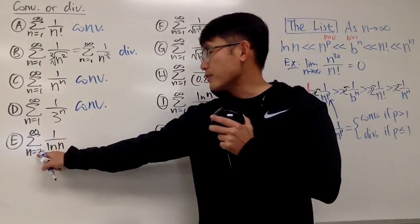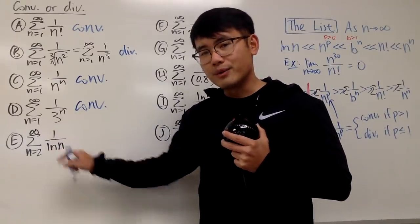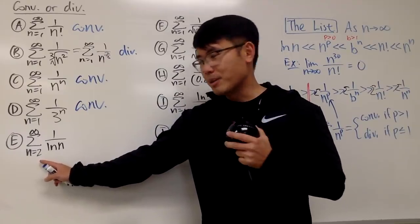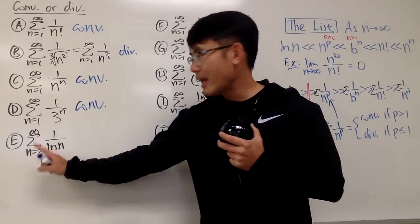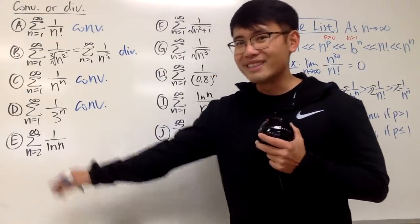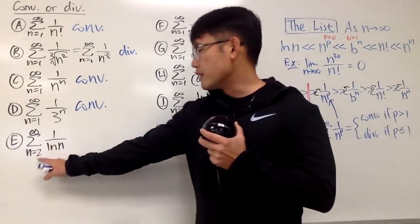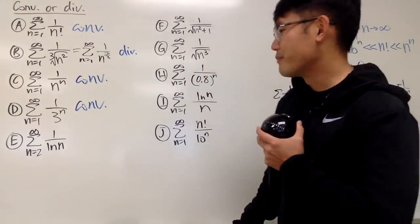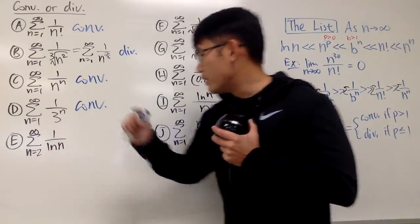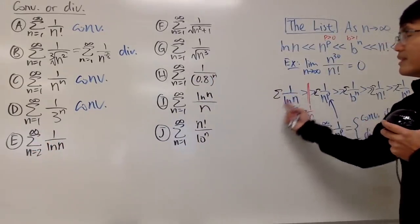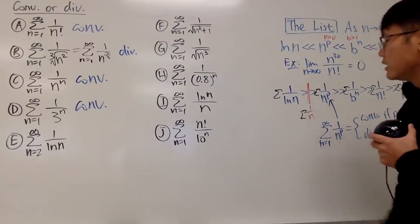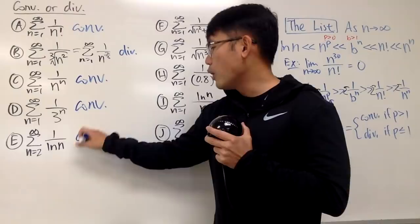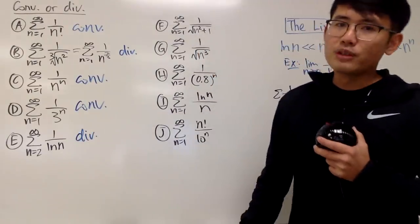The series from n=2 to infinity of 1 over ln(n) — notice we start at n=2. Leave a comment explaining why n must start at 2 or 3 and not 1. The sum of 1 over ln(n) is the biggest term on the list, which is bigger than the divergent harmonic series, so this also diverges by the direct comparison test.